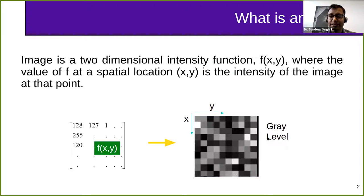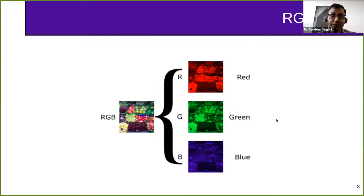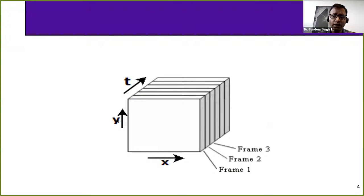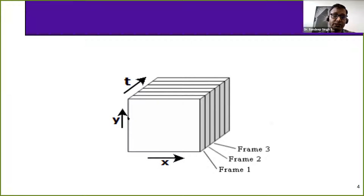An image may be of different types. We have seen grayscale images. It may also be a color image. One type of color image is RGB — a combination of three channels: red channel, green channel, and blue channel. When we combine all three channels, it makes an RGB or colorful image. A video is nothing but a collection of images. In terms of video, an image is called a frame. So a video is a collection of frames, or we can say video is the temporal sequence of frames. X and Y are the resolution of a particular image and T is the temporal dimension.